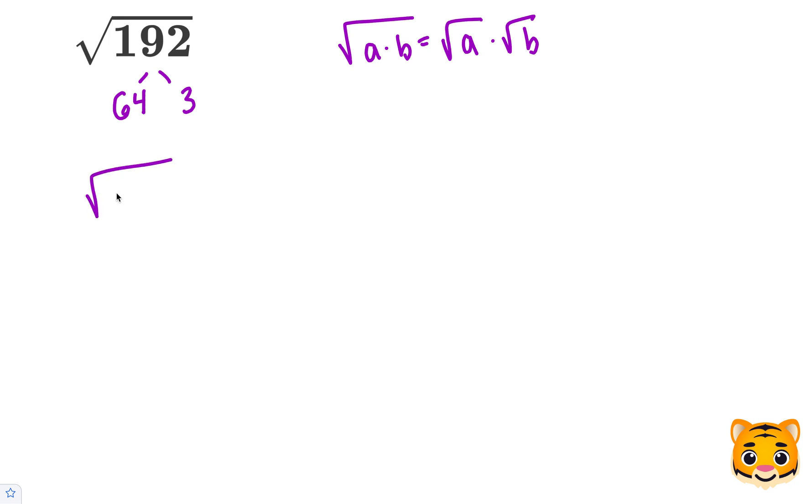And we can rewrite the square root of 192 as the square root of 64 times 3, which can then be separated using our math rule into the square root of 64 times the square root of 3. 8 times 8 is equal to 64, so the square root of 64 is equal to 8. So now we can rewrite this in the simplified form of 8 times the square root of 3.